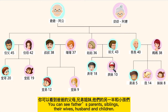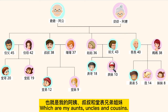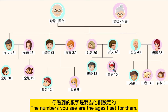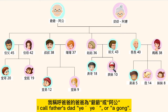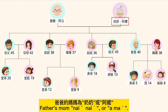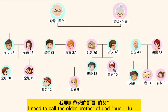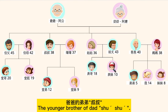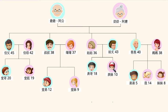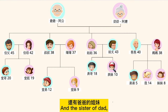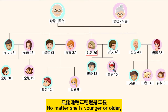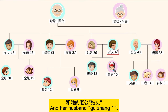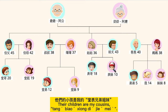In this picture, you can see father's parents, siblings, their wives, husbands, and children — which are my aunts, uncles, and cousins. The numbers you see are the ages I set for them. I call father's dad 爷爷 or 阿公, and father's mom 奶奶 or 阿嬷. I call the older brother of dad 伯父, and his wife 伯母. The younger brother of dad is 叔叔, and his wife is 嬸嬸. The sister of dad — no matter if she is younger or older — I call her 姑姑, and her husband 姑丈. Their children are my cousins.